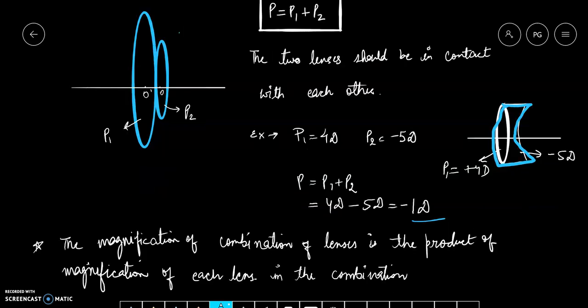There is one more point to be noted here. The magnification of combination of lenses is the product of magnification of each lens in the combination. If the first lens has linear magnification M1 and second lens has magnification M2, then the magnification of this combination will be equal to the product of individual magnification, that is M equals M1 into M2.